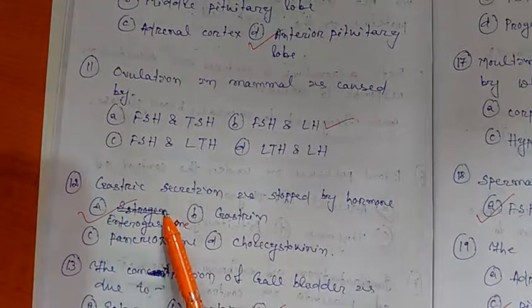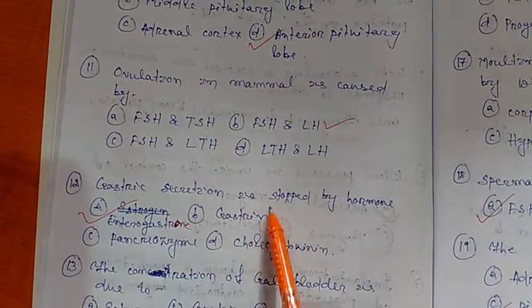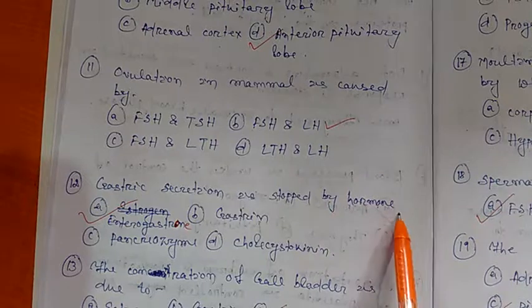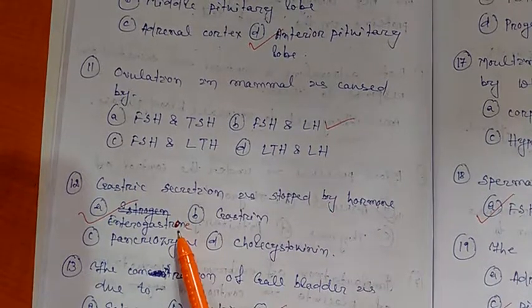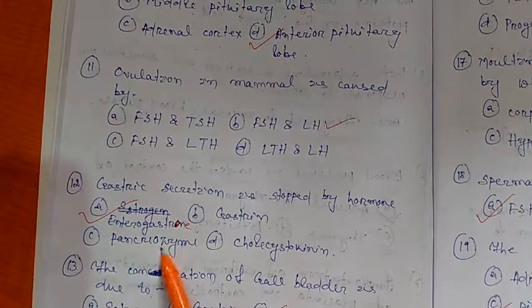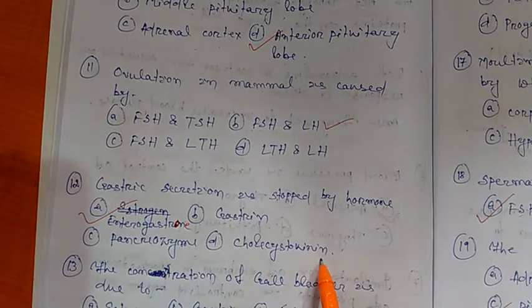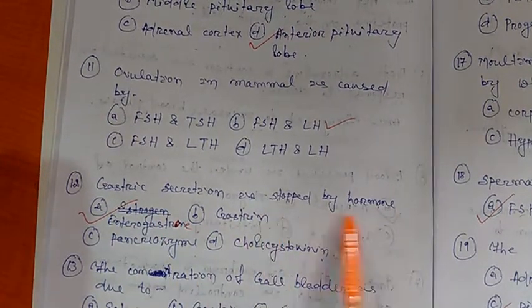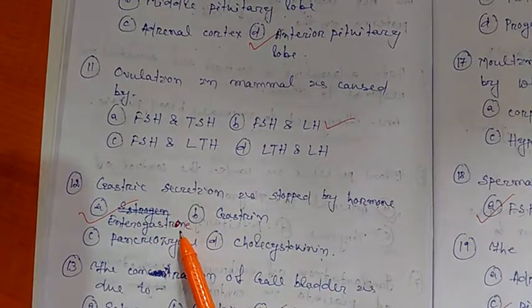Question number 12. Gastric secretion is inhibited by hormone enterogastrone, gastrin, pancreozymin, and cholecystokinin. So gastric secretion is inhibited by hormone enterogastrone.